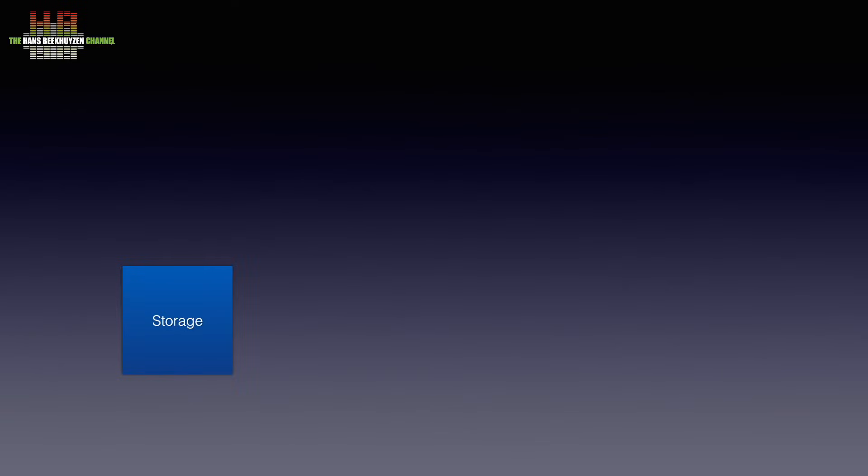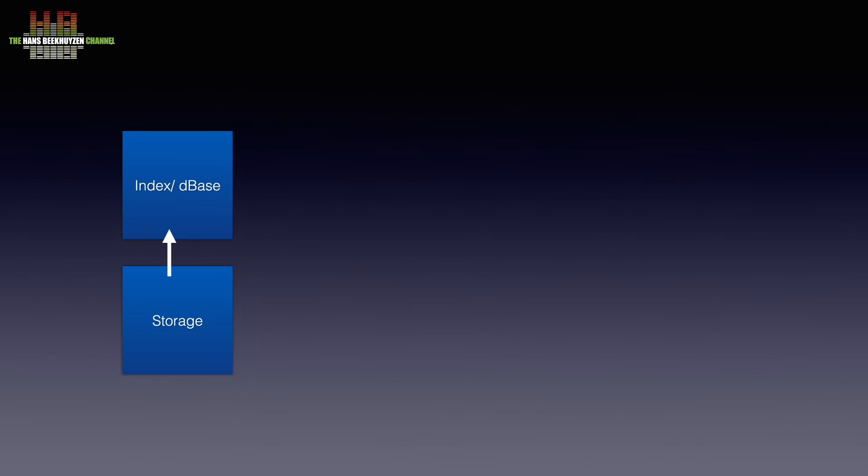For now let's speak of file-based music players — players that are used to play FLAC, MP3 or other music files. Let's analyse what functions are needed in such a player. Storage, where the music files are kept. An index or database to easily find music files based on artist, track name, album name and so on. To do this, each audio file needs to have metadata that contains this information, often called ID tags.